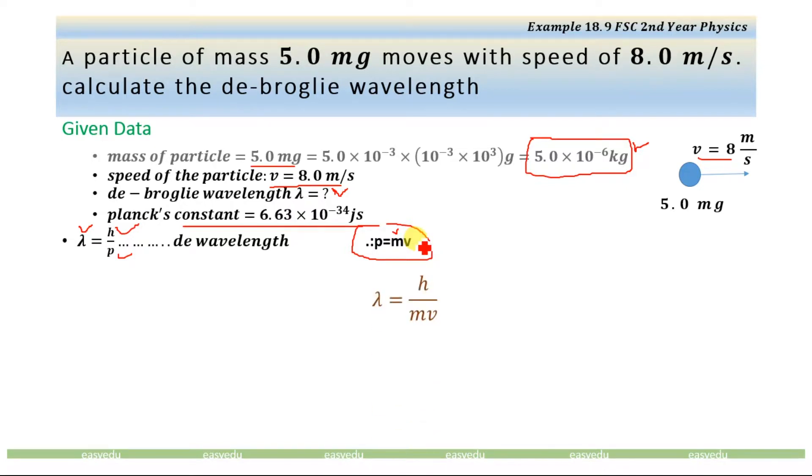Substituting the value for the momentum p in this de Broglie equation, we will have λ = h/mv.